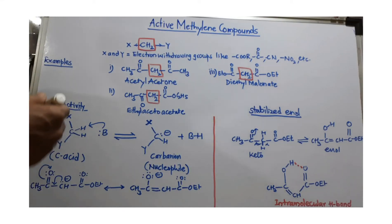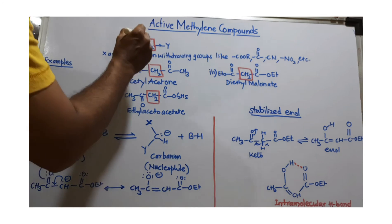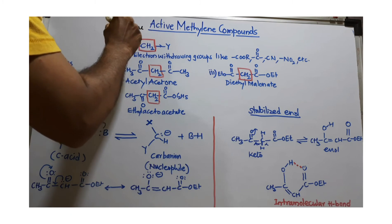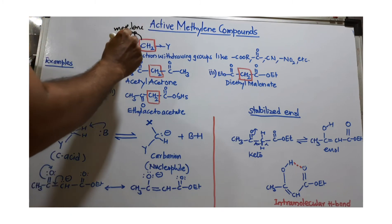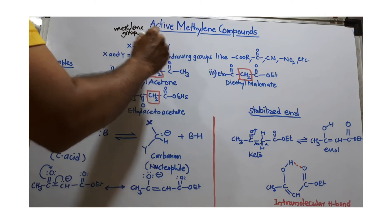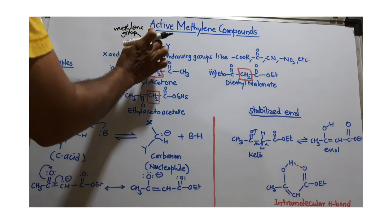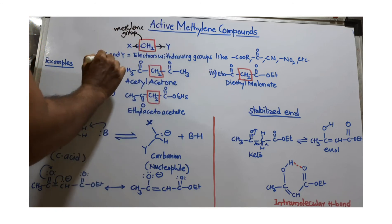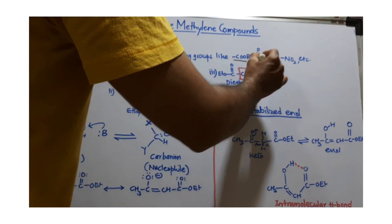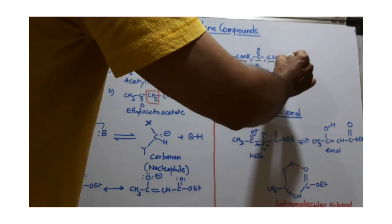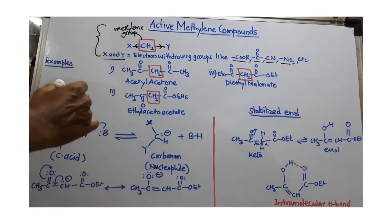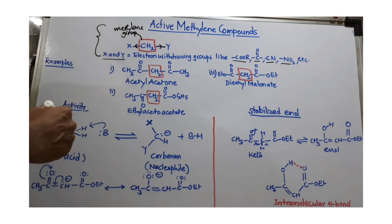Active methylene compounds are compounds having a methylene group that is sandwiched between two powerful electron withdrawing groups X and Y, where X and Y are either ester, carbonyl compound, cyanide, or nitro group. Such a compound is called an active methylene compound, and you can easily recognize whether a compound is an active methylene compound or not.